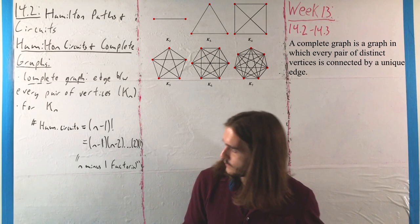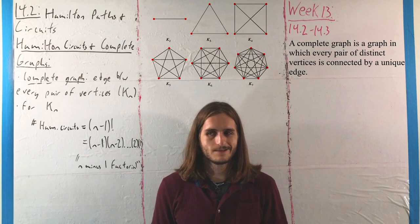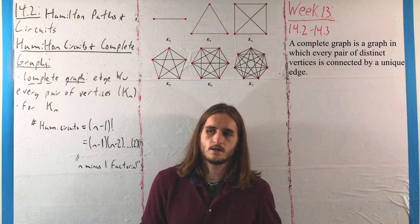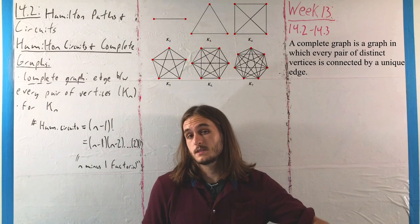Before I get into the specific instruction for Hamilton circuits with complete graphs, I want to mention that the book is focused somewhat myopically on complete graphs in this context. Just understand that complete graphs aren't the only ones that have meaningful relationships with Hamilton paths and circuits.